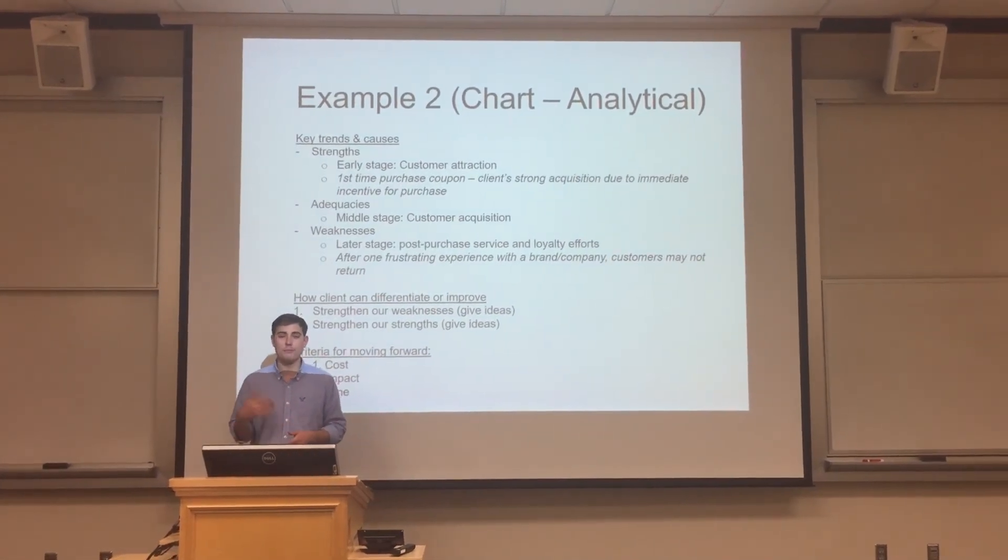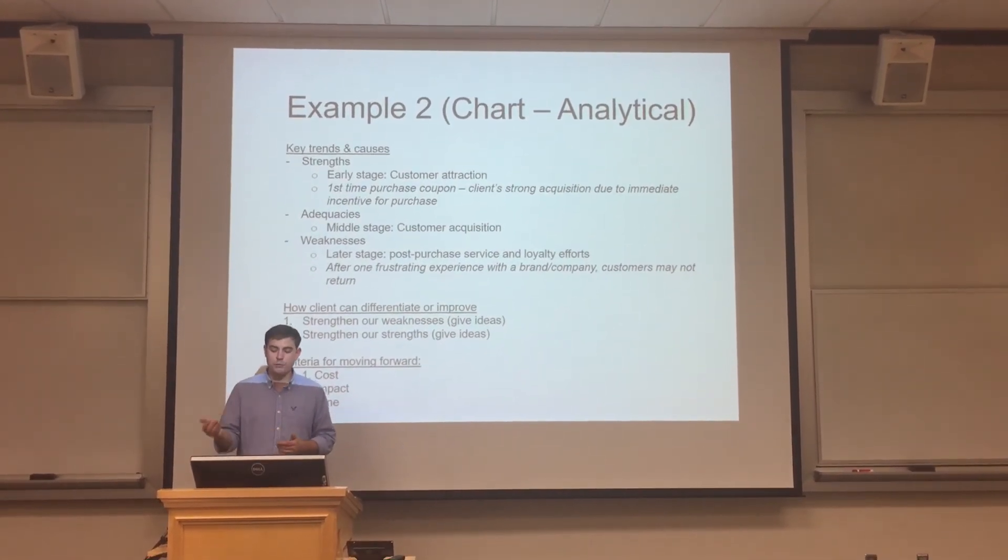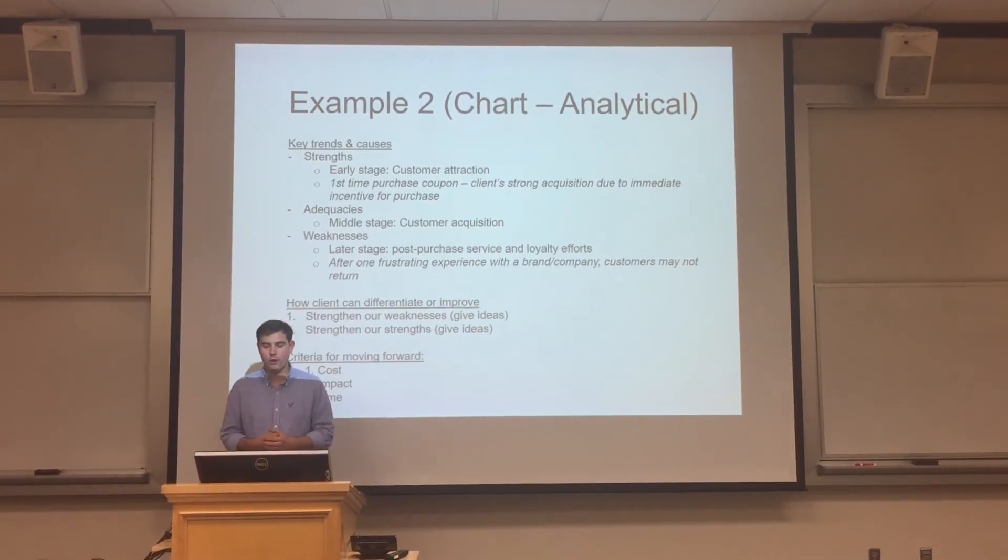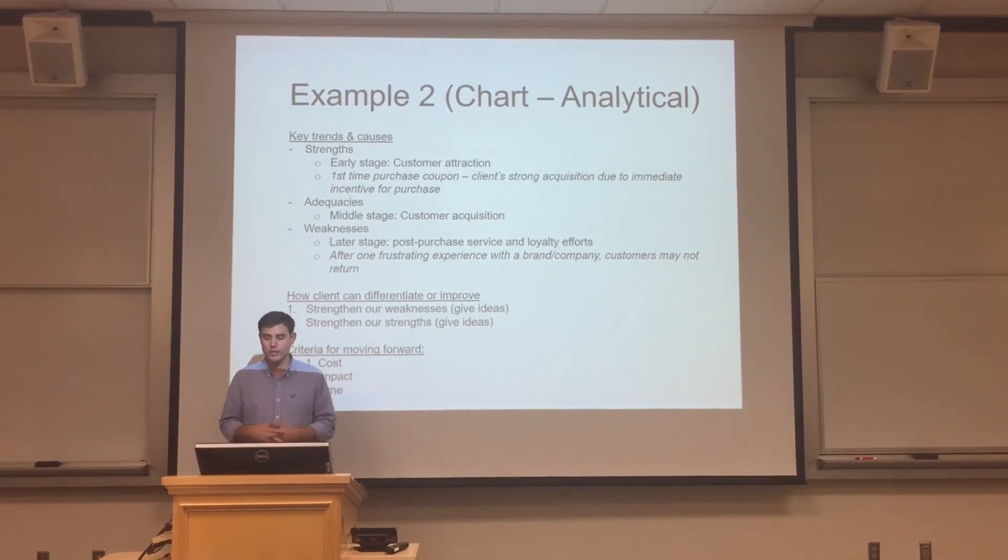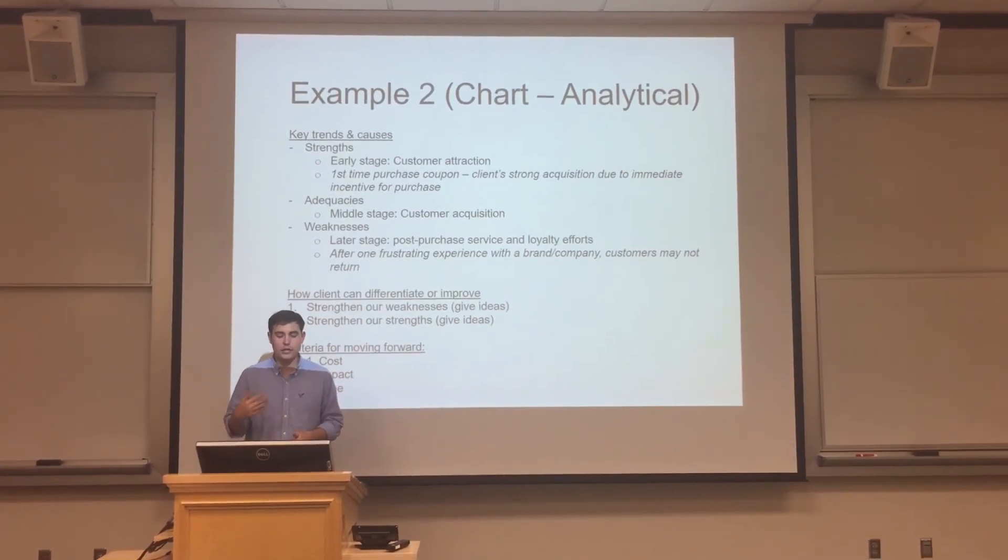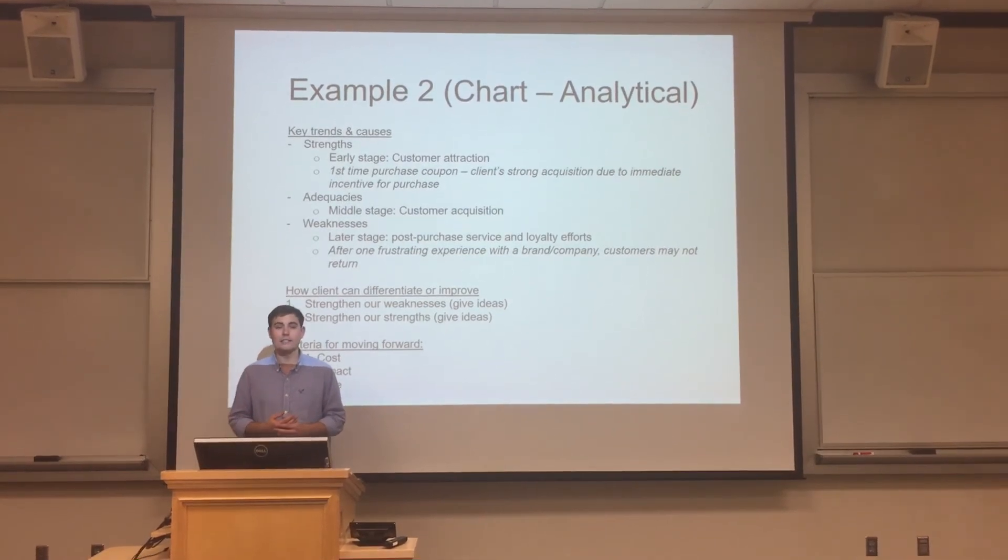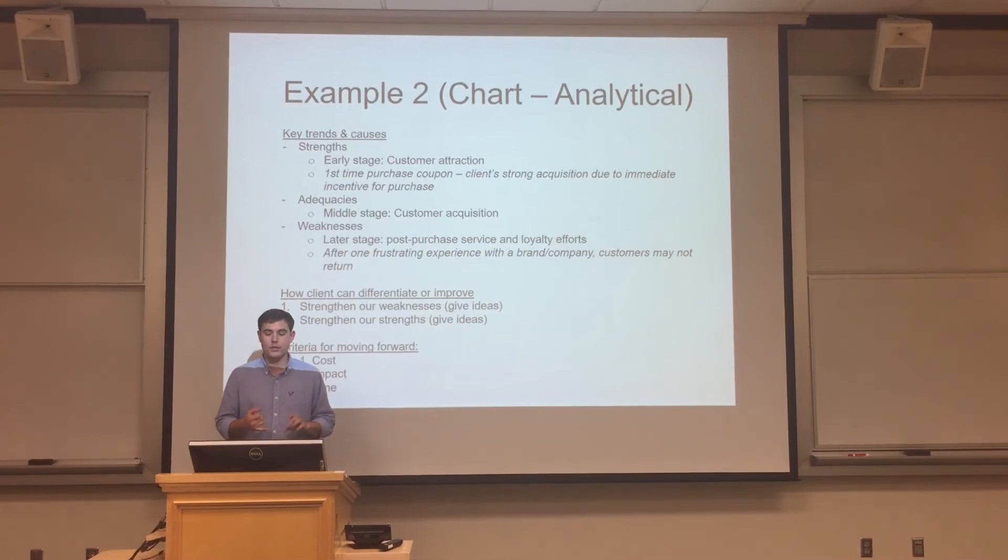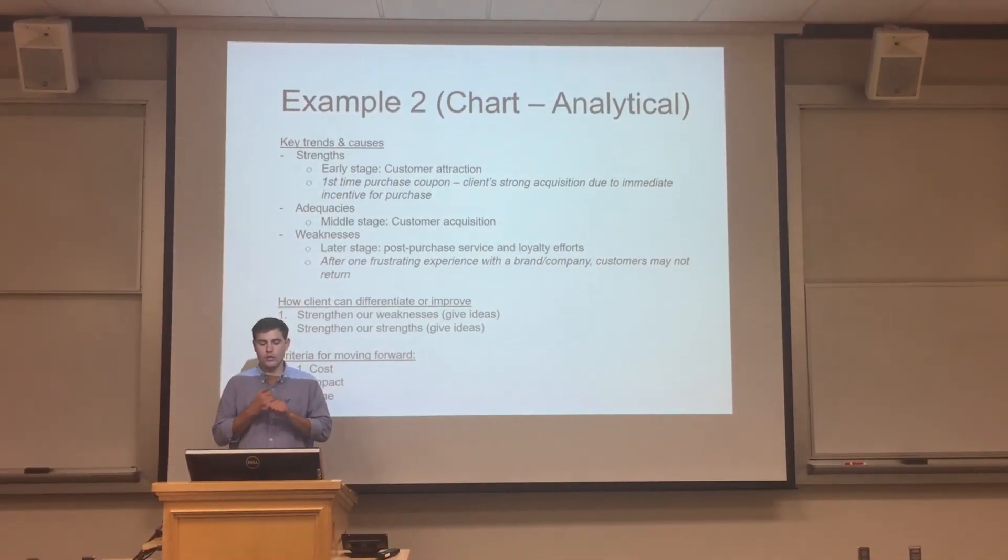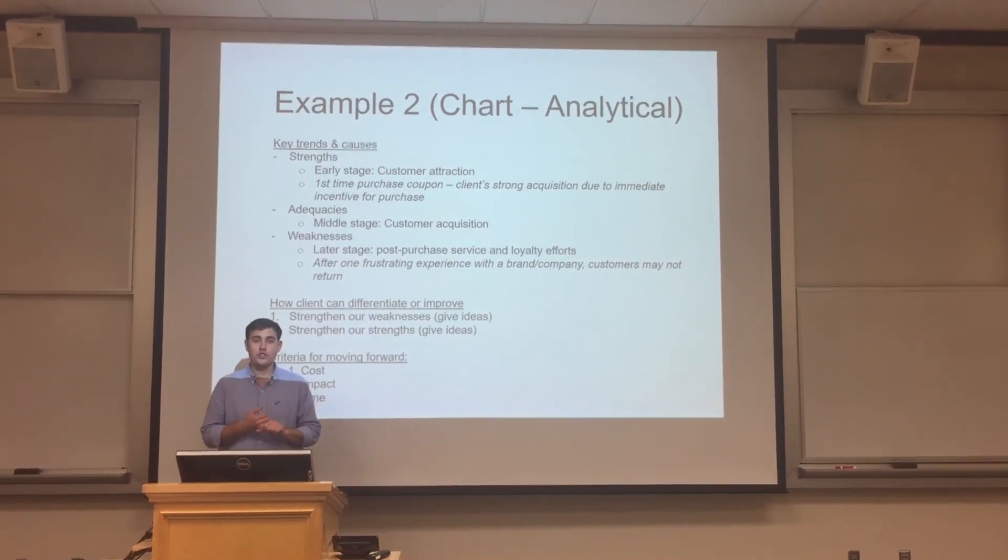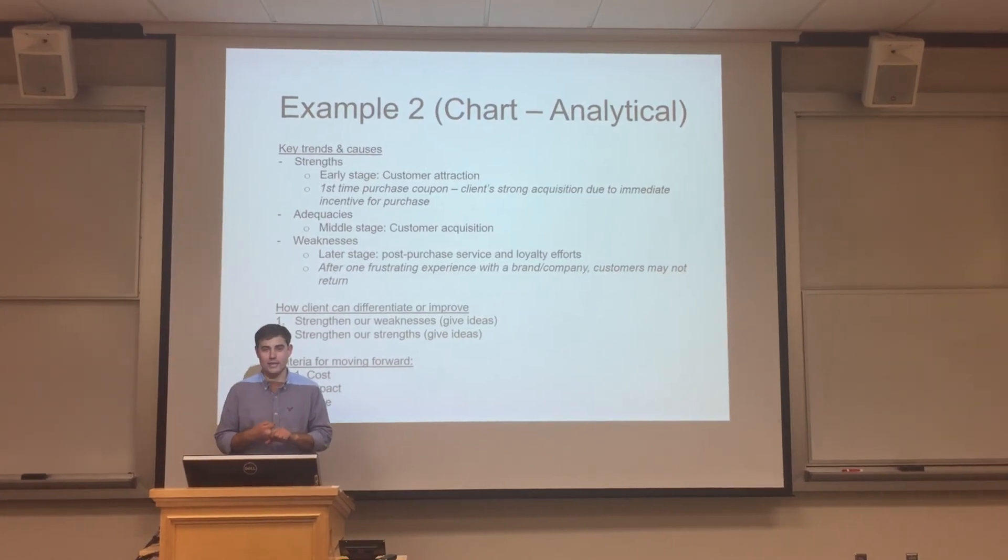Last of all, they could provide special perks for repeating customers such as repeat purchase coupons or offers, loyalty rewards on the website, or other perks. When deciding amongst these myriad opportunities for differentiating and improving our client across the customer life cycle, I would suggest that our client analyze each one of these options across three criteria. Number one, how much will it cost us to differentiate or improve in that category? Number two, what's the overall impact going to be on the business? And number three, how much time is it going to take to implement?